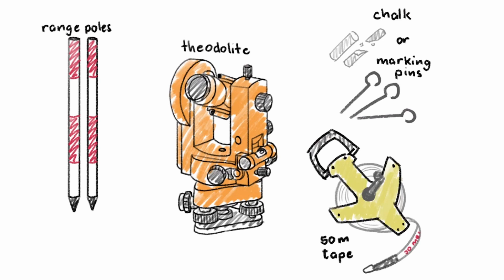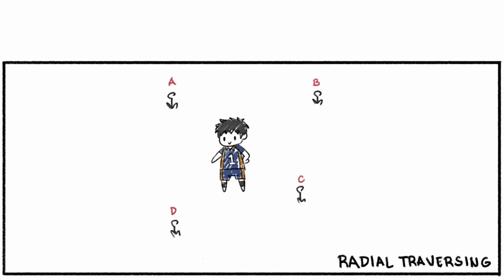The first step in this fieldwork is to choose four corners of an arbitrary field, then mark or drive marking pins on each corner, labeling them A, B, C, and D.